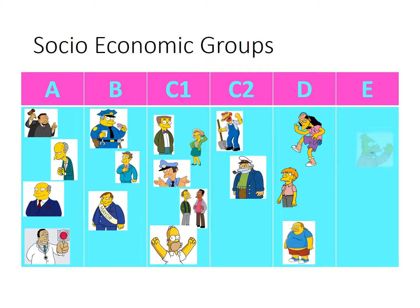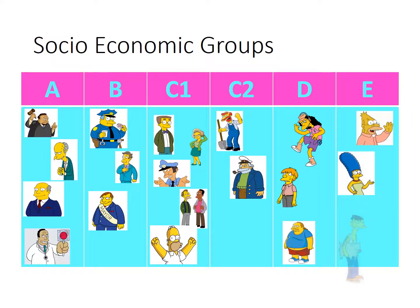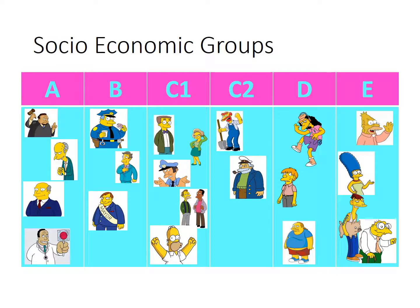Finally, we've got E — the ones that are state funded. We have Grandpa, who is state funded, and Hans Moleman, because they're both quite old. There's Marge as a mother — is she on any state benefits? And then Cletus, the unemployed. So that's socio-economic grouping split into six categories using Simpsons characters.